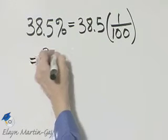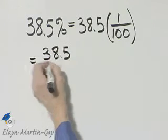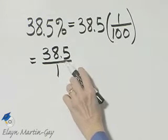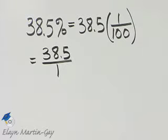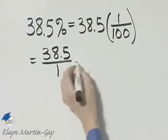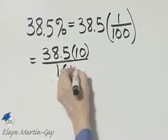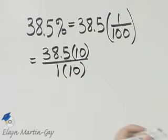So I have thirty-eight and five-tenths over one, and that's not a very good format. We do not like to have a decimal number as a numerator or denominator of a fraction, so let's go ahead and take care of that by multiplying the numerator and also the denominator by ten.